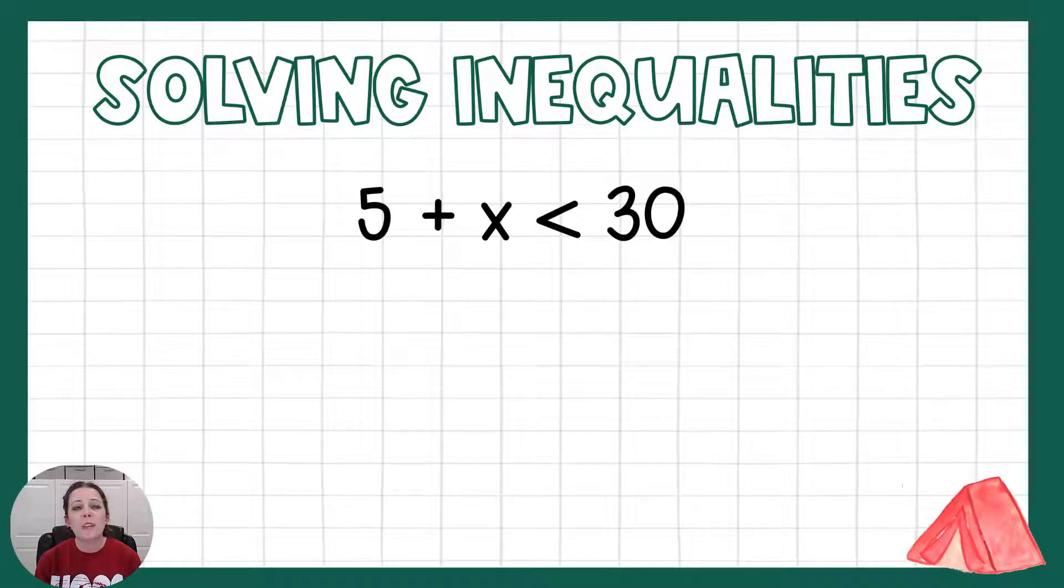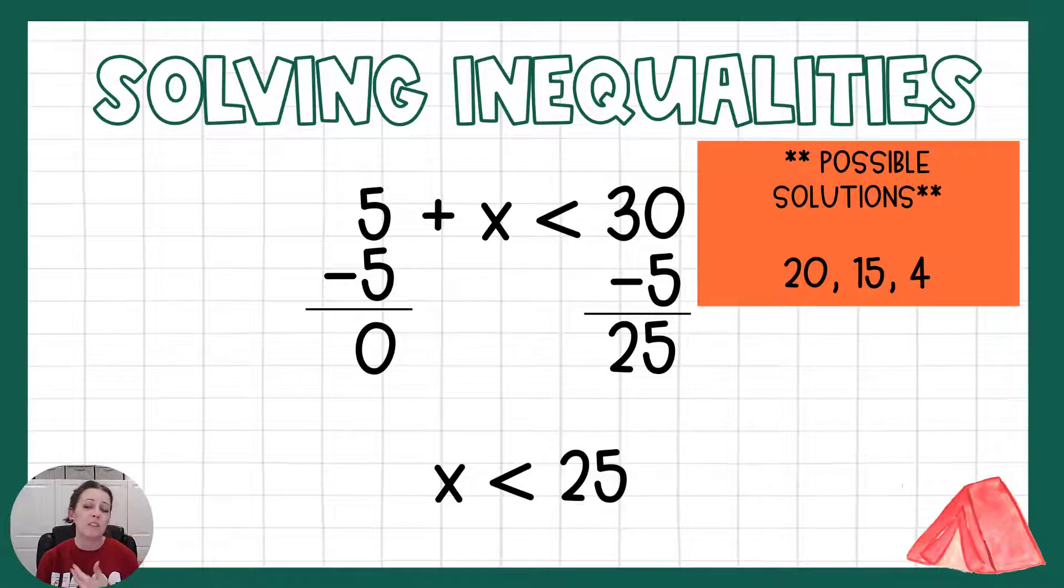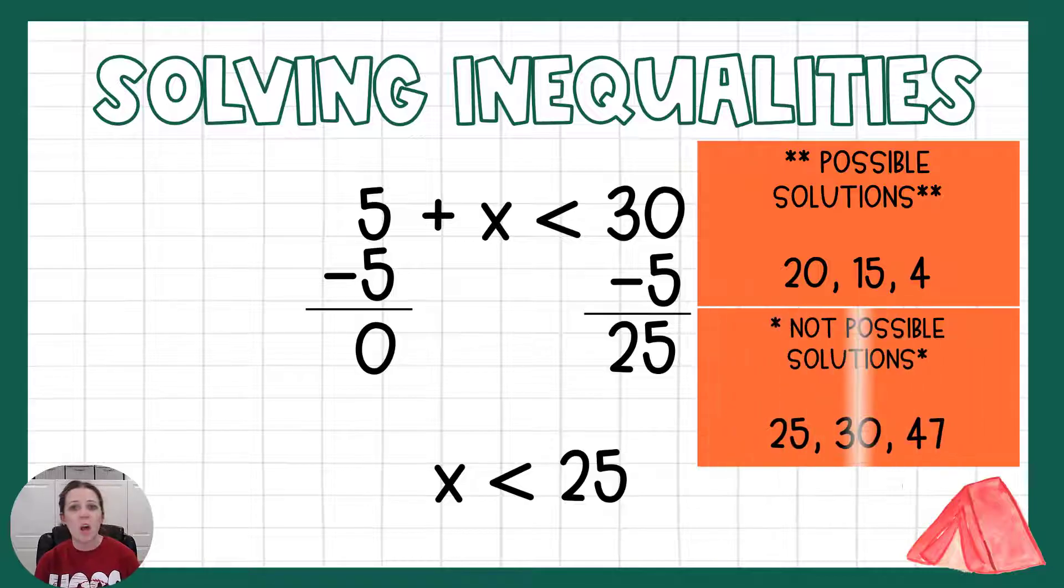Here's another one using addition. 5 plus x is less than 30. Again, we want to get that x by itself, so we're going to subtract 5 from both sides. And that is going to leave us with x is less than 25. So possible solutions, any number less than 25, but some of those could be 20, 15, or 4. Things bigger than 25 or greater than 25 are not possible solutions. So 25, 30, and 47 would not work in this situation.